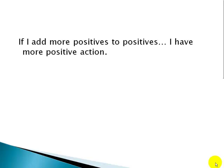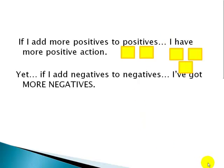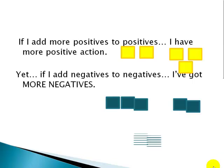If I add more positives to positives, I have more positive action. Positive 2 put together with positive 3 gives me a value of positive 5. Yet, if I add negatives to negatives, I've got more negatives. Negative 3 plus negative 2 would be negative 5, plus negative 2 would be negative 7.